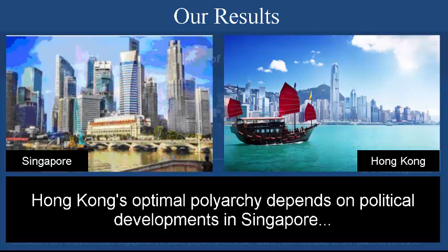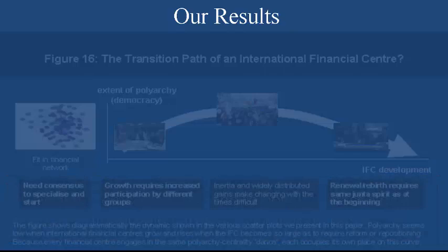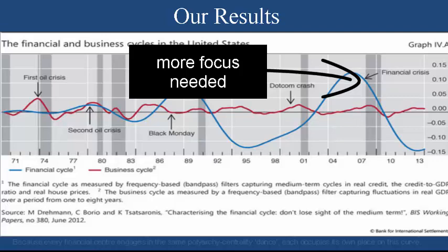The best way to tweak political institutions in a place like London or Hong Kong is not simply to say we need more democracy, we need more polyarchy, or we need to increase autocracy, but instead to look at where the competitiveness of that jurisdiction is vis-à-vis its peers and rivals,